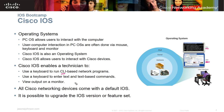All Cisco networking devices come with a default IOS, and you can upgrade those IOS versions with feature sets depending upon the device and the upgrades Cisco has made. If you're looking for those upgrades, you need to get on the Cisco website, log in, and get that support. You'll learn a lot more about that in this course and future Cisco courses.